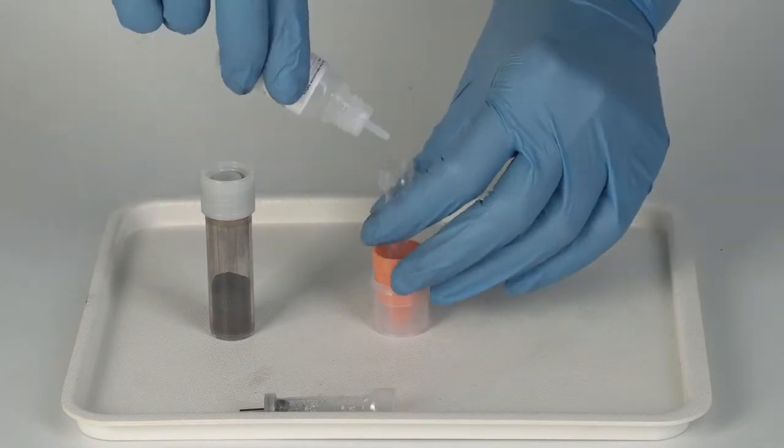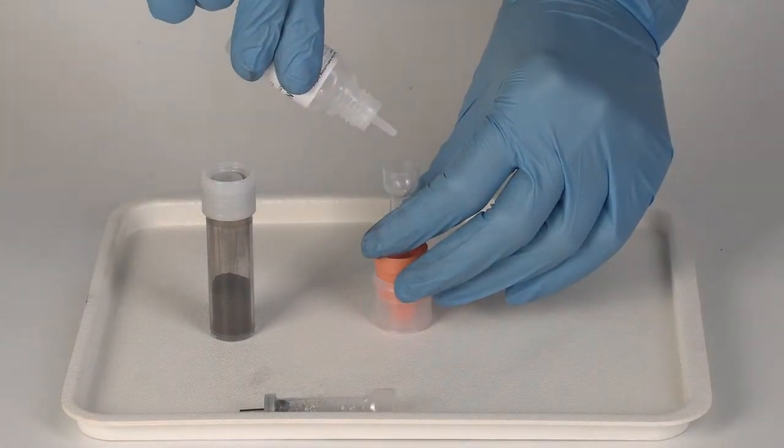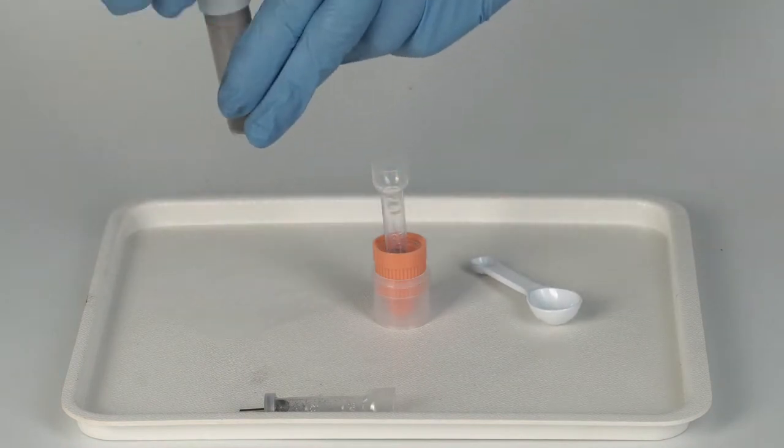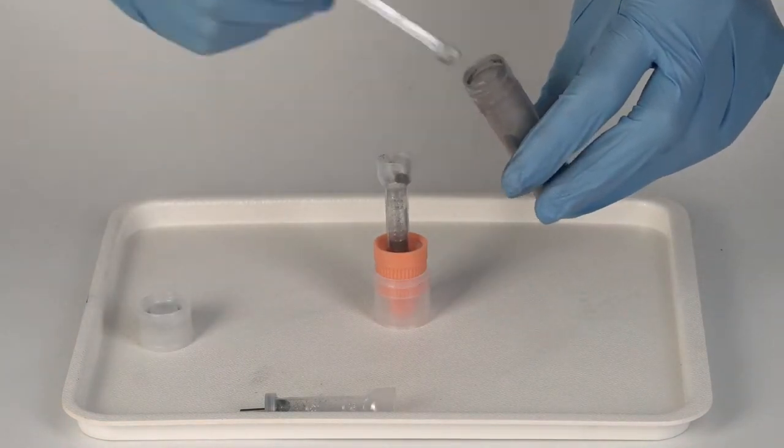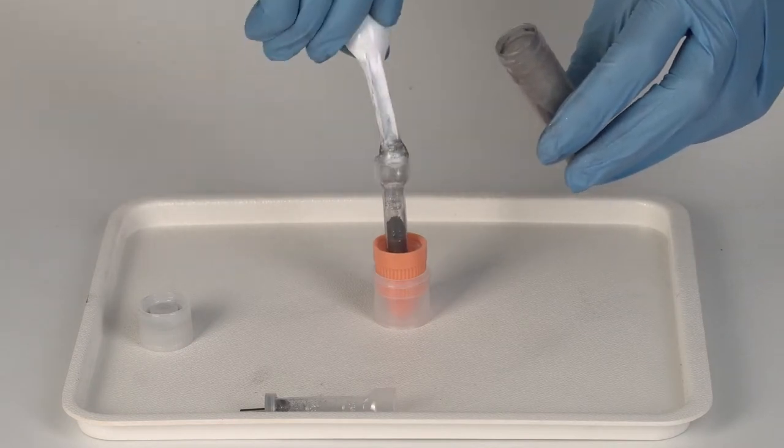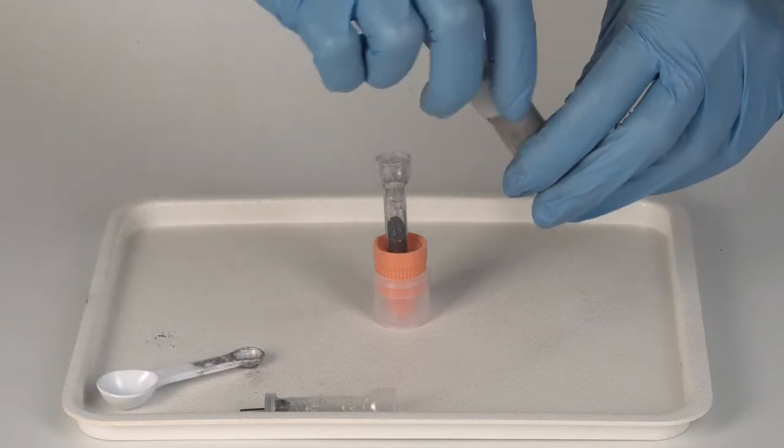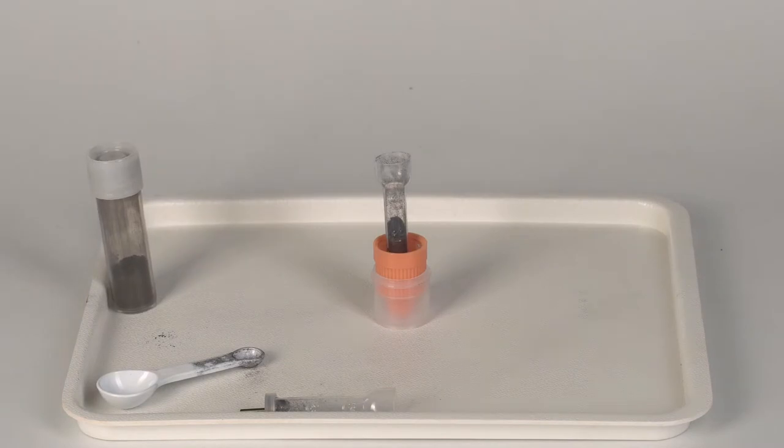Now add 10 drops of ammonium chloride to the plastic tube. Then add two small measuring spoons of the mixture you prepared before. Close the vial and save the rest of the mixture to make the second battery and to repeat the experiment.